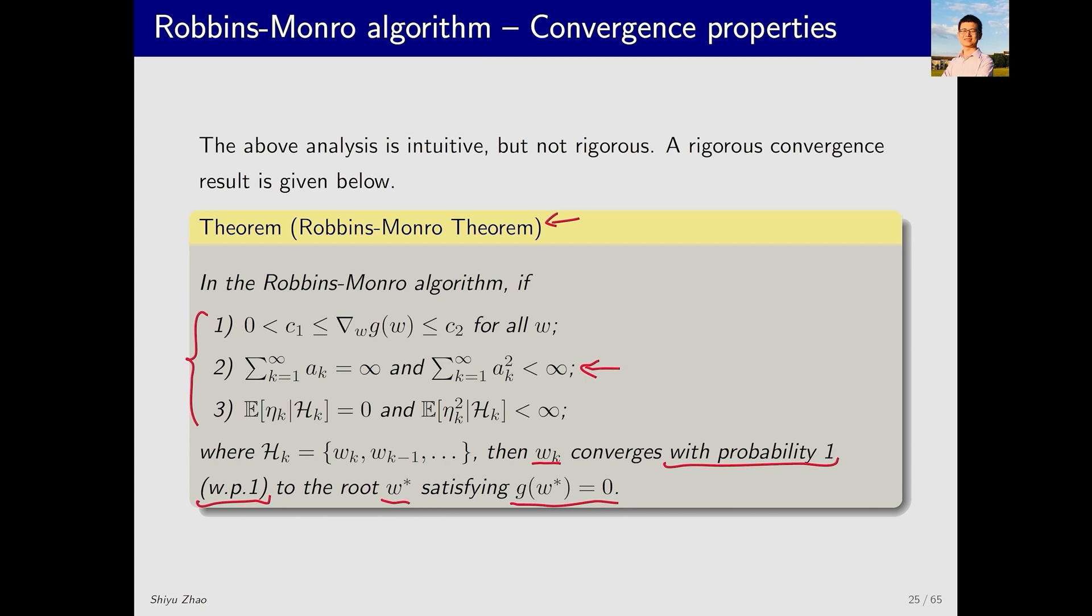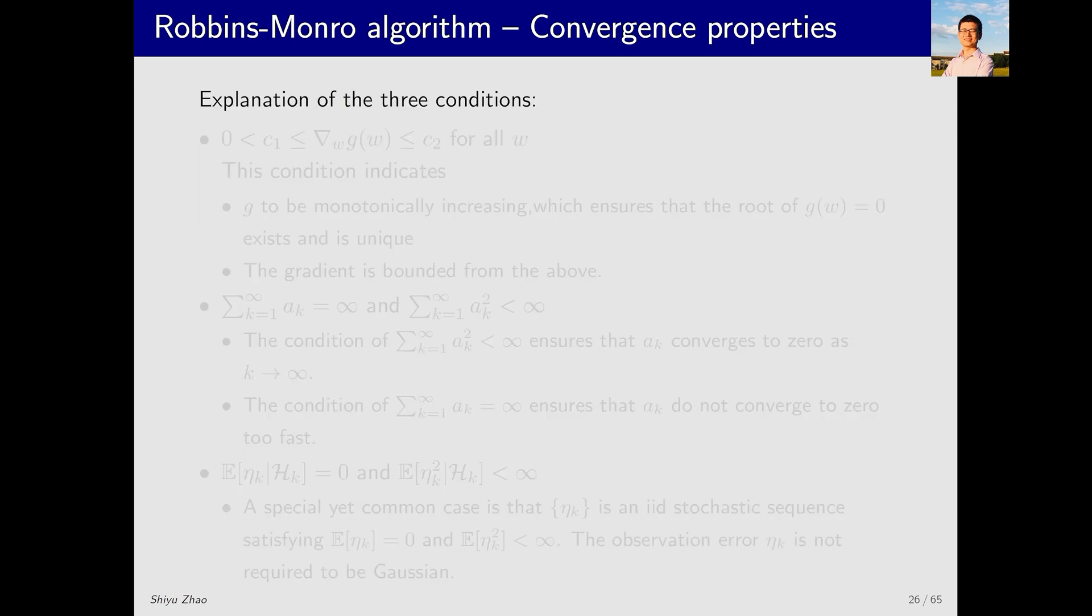Let's have a look at the three conditions. The first condition is about the gradient of g(w). The second condition is about the coefficient a_k. The third condition relates to eta, which is the measurement error.